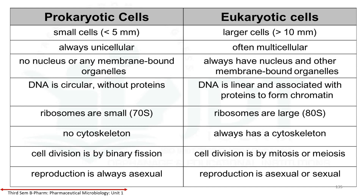Ribosomes are small in prokaryotics, consisting of 70S (Svedberg units, referring to the sedimentation rate). Ribosomes are larger in eukaryotics. There is no cytoskeleton in prokaryotics, whereas eukaryotics always have a cytoskeleton. Prokaryotics divide by binary fission, while eukaryotics divide by mitosis or meiosis.